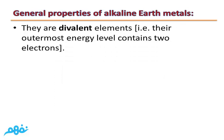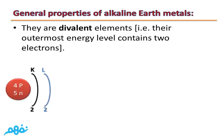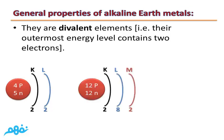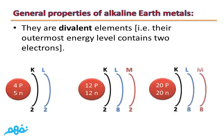The third property is they are divalent elements. In other words, their outermost energy level contains 2 electrons. For example, beryllium's outermost energy level L contains 2 electrons; magnesium's outermost energy level M contains 2 electrons; and calcium's outermost energy level N contains 2 electrons. So all alkaline earth metals contain 2 electrons in their outermost energy level, making them divalent.